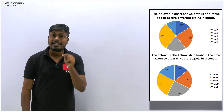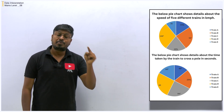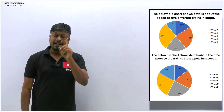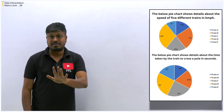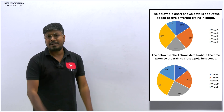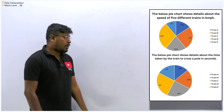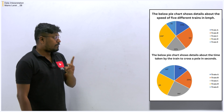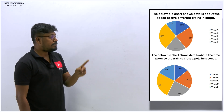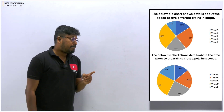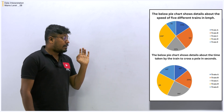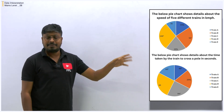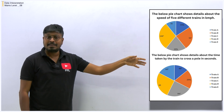It is the 28th video — I have already posted 27 data interpretation videos for mains level. Do not forget to write the test first and then watch this video. Now getting into the 28th video: they have given two pie charts. The first pie chart is based on the speed of the train, and the second pie chart is based on the time taken to cross a pole.